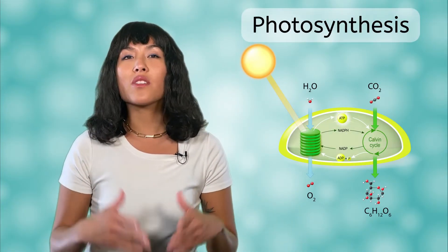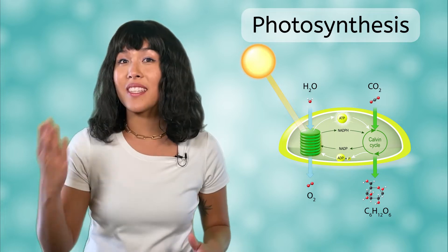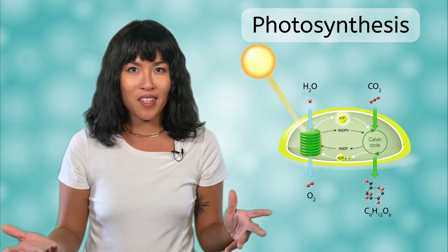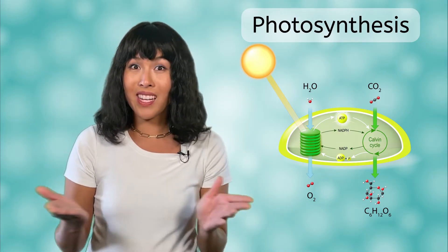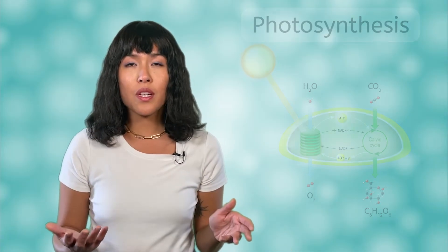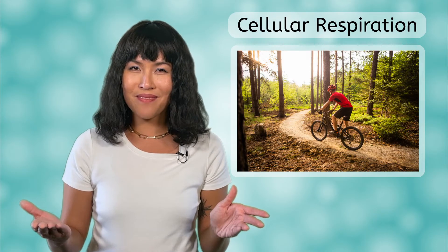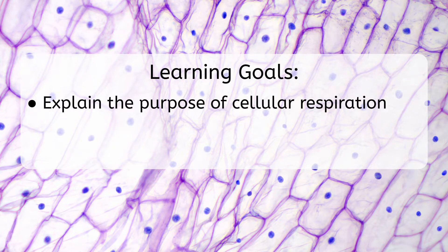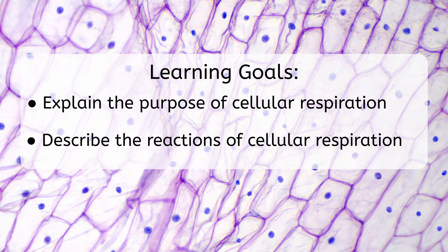In the last lesson, we learned how photosynthesis uses light energy, water and carbon dioxide to produce glucose and oxygen. But what do plants do with their glucose when they need energy? Similarly, when animals like us consume glucose, how do we utilize its chemical potential energy for all of our needs like moving and thinking? The answer to that lies in another set of chemical reactions called cellular respiration. By the end of this lesson, you'll be able to explain the purpose of cellular respiration and describe the reactions of cellular respiration.